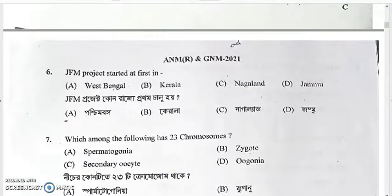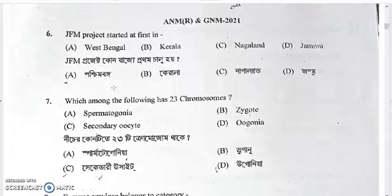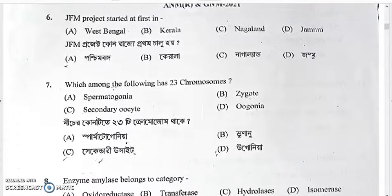Which of the following has 23 chromosomes — spermatogonia, zygote, secondary oocyte, or oogonia? Spermatogonia, zygote, and oogonia are all diploid with 46 chromosomes. The secondary oocyte is haploid with 23 chromosomes, so the answer is option C — secondary oocyte.